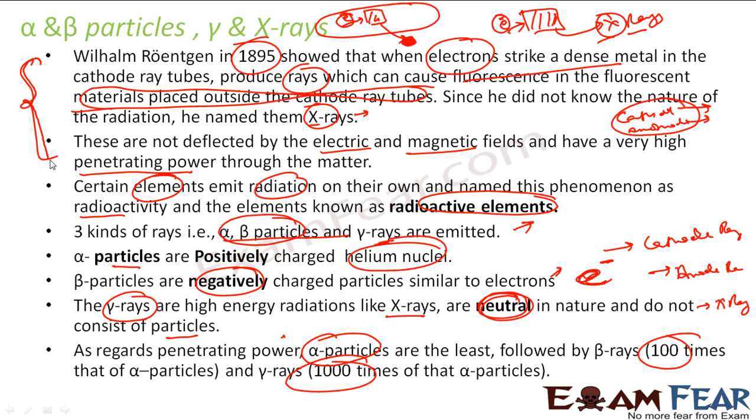That's about alpha particles, beta particles and gamma rays. Roentgen in 1895 bombarded metal with electrons and found rays coming which crossed the cathode ray tube and impacted fluorescent material. Alpha particles are positively charged helium nuclei and beta are negatively charged particles similar to electrons.